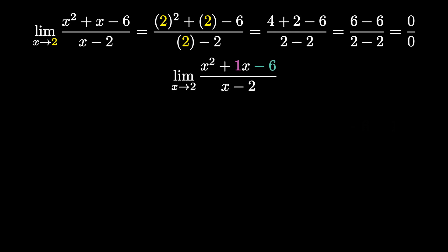Then go down the line to see which pair also adds to give 1. Pairs that come to mind: negative 6 and 1 (since negative 6 times 1 is negative 6), or 3 and negative 2, or negative 3 and 2 — those all work, they all multiply to give negative 6.